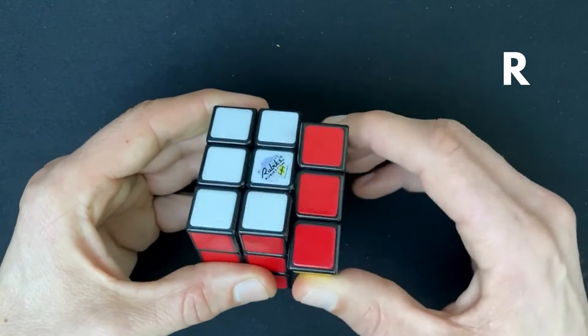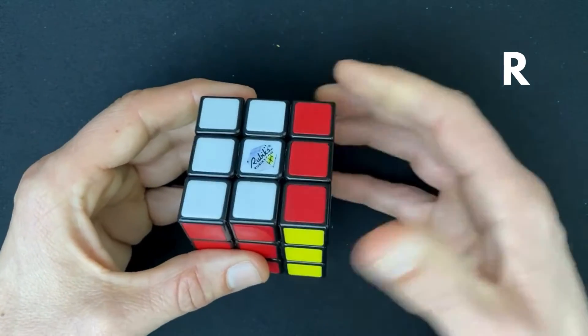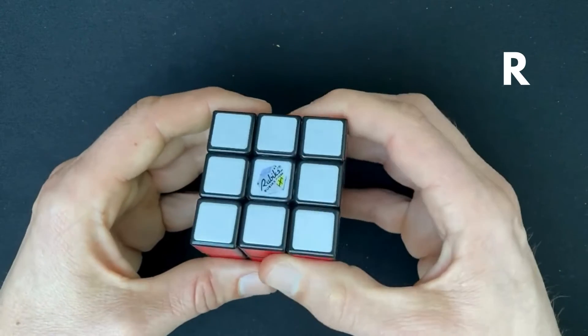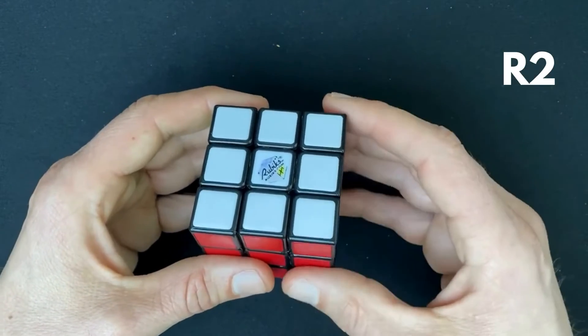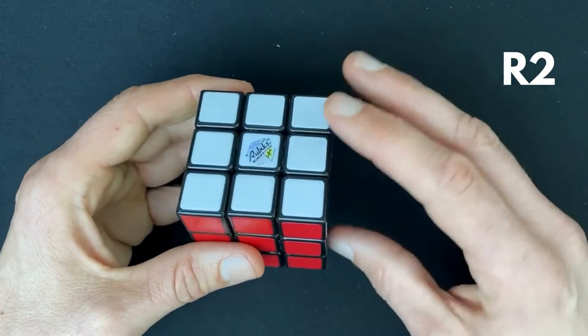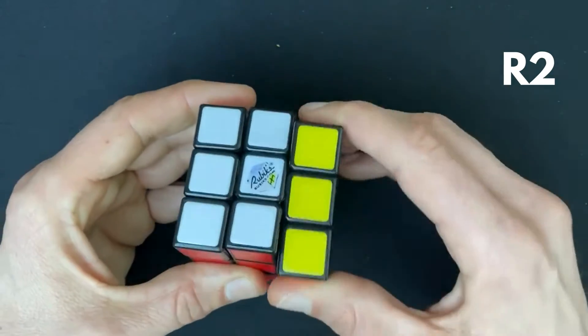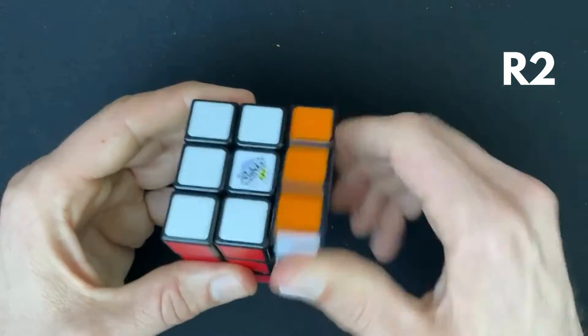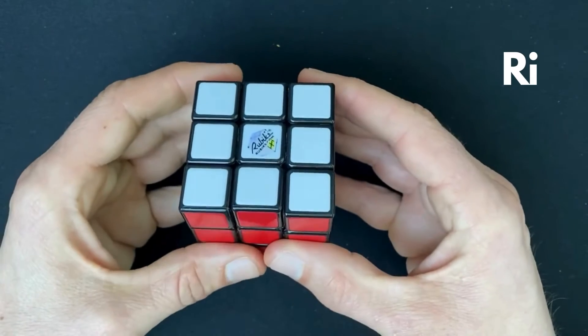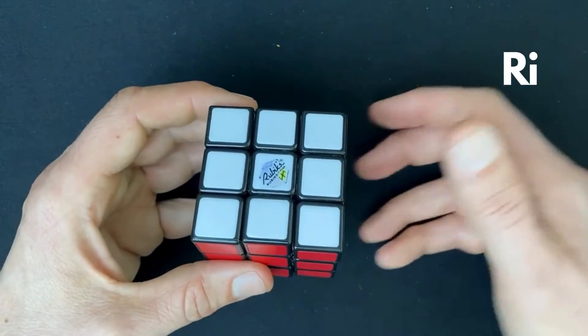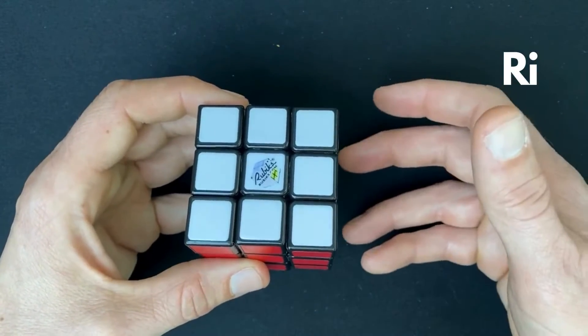So this is R, and sometimes you see R2, so an R with a number behind it. So R2 is one, two. So this is R2. And counterclockwise rotations are always indicated with an I. The I is for inverted.